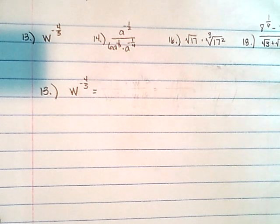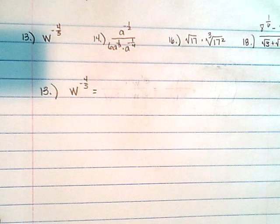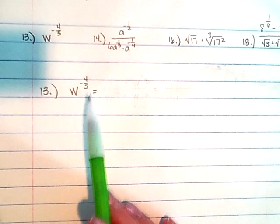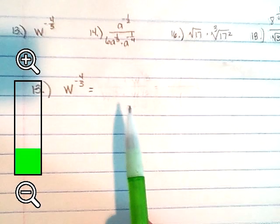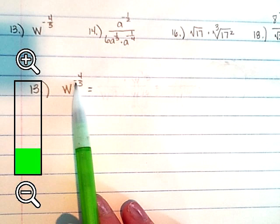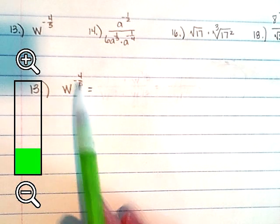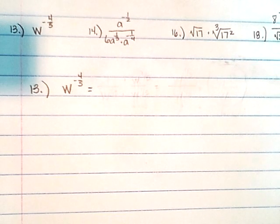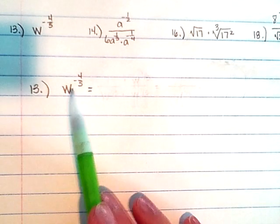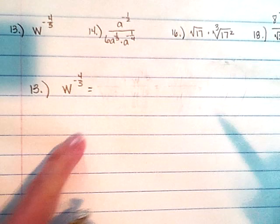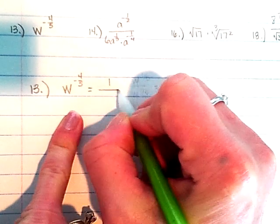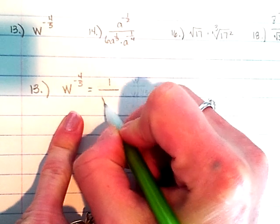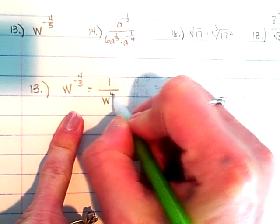Number 13 starts off and asks you to simplify w to the negative four-fifths power. The problem is I have a negative exponent, so because I have a negative exponent, I'm going to make that divided by the power of four-fifths. So that becomes one divided by w to the four-fifths.